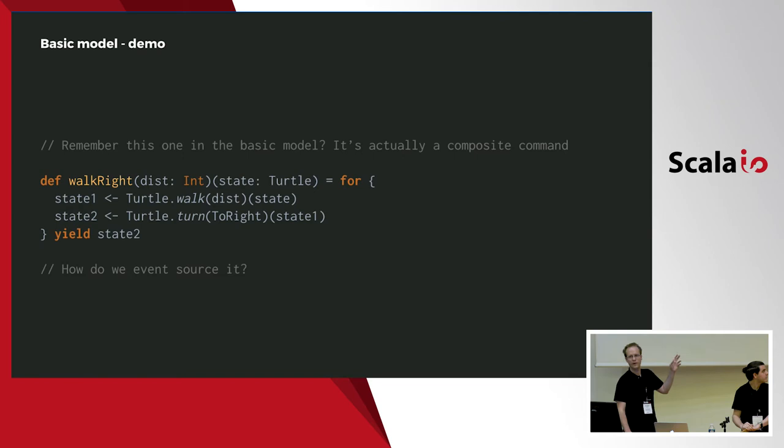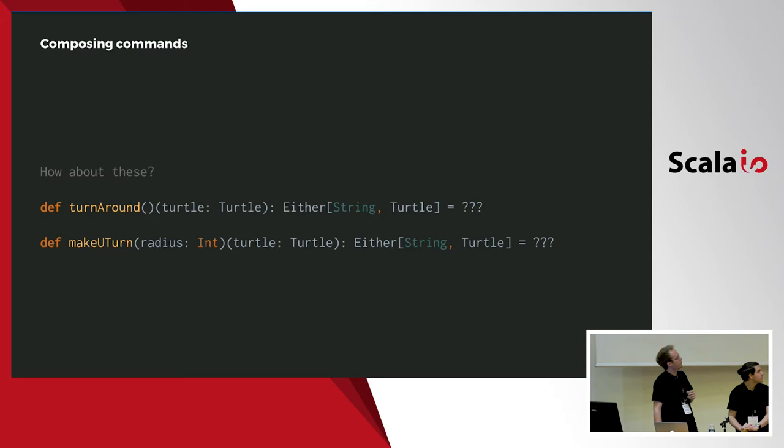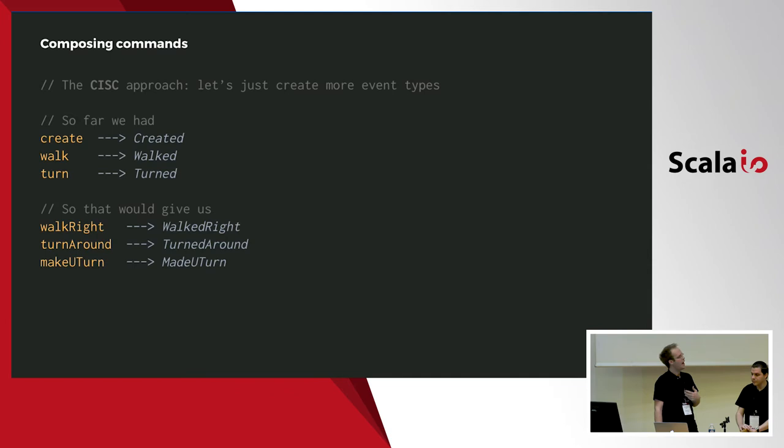Why would we want to compose commands in the first place? Remember the walk-right function from the basic model? We can consider it a composite command, because we delegate to the walk command and the turn command to define something called walk-right. So how could we event source such a thing? We can have many examples: turn around, make you turn, and so on — we can think of a lot of composite commands.